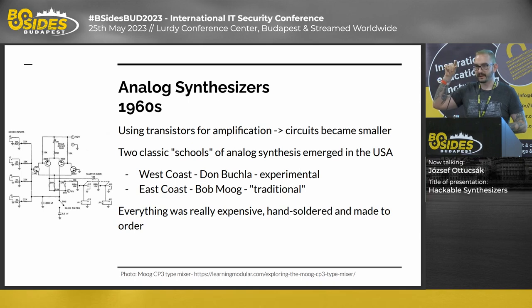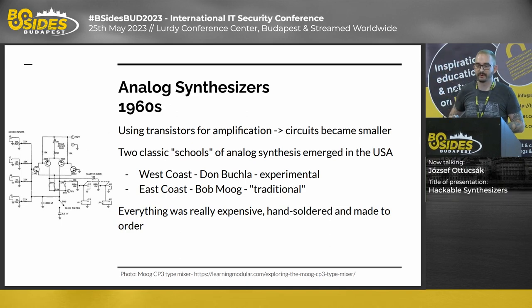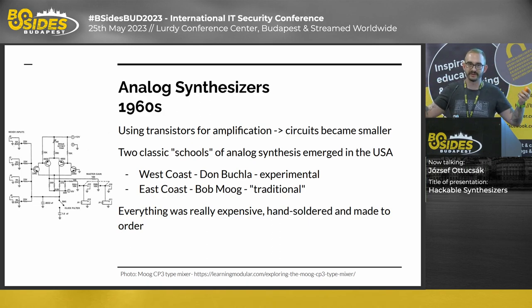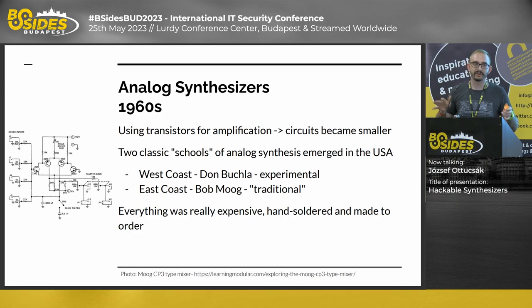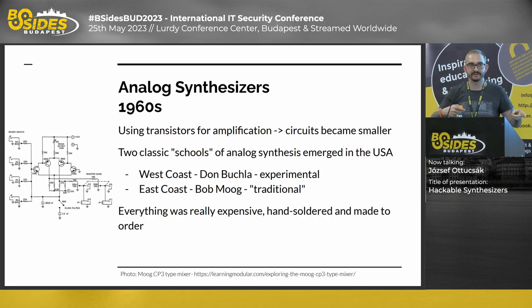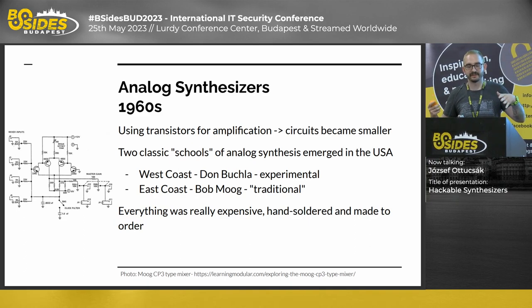After that, transistors came, so circuits became much smaller — going from vacuum tubes to transistors. Synthesizers became a thing in the US. There was West Coast Synthesis driven by Don Buchla, a more experimental version where he thought of the synthesizer as its own instrument category. And Bob Moog and the East Coast Synthesis used more traditional classical music approaches like pianos. Back then, everything was really expensive, hand-soldered, and made-to-order — pretty close to the DIY synthesizer scene, just in the early days.